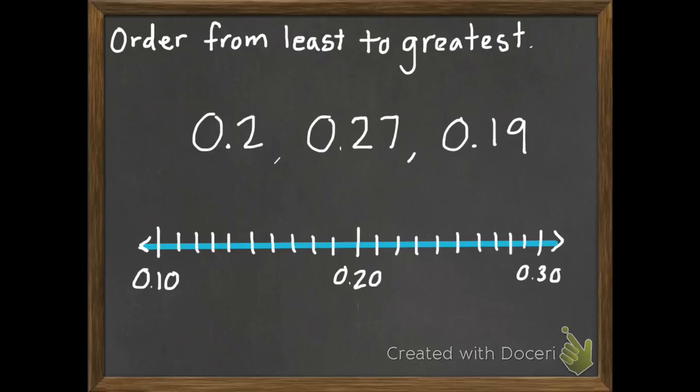So I'm going to start with my 2 tenths, which is the same as 20 hundredths. So I put a dot right there. Then I have 27 hundredths. So I'm going to count 7 spots over from there. 1, 2, 3, 4, 5, 6, 7.